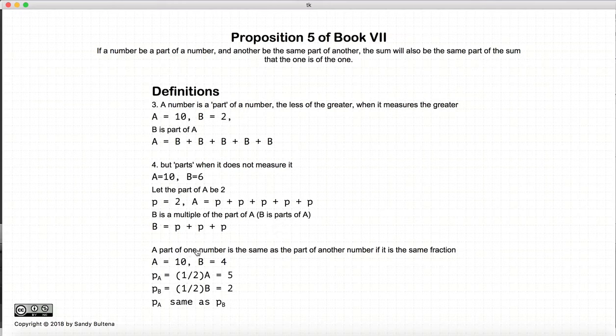Something else is that when Euclid refers to two parts being equal, he's referring to the fraction. He's not referring to the actual value. So, if a is equal to 10 and b is equal to 4, let the part equal 1 half of a and let the other part be 1 half of b.